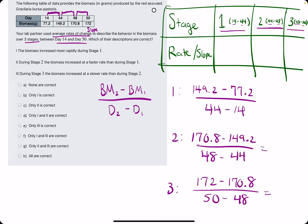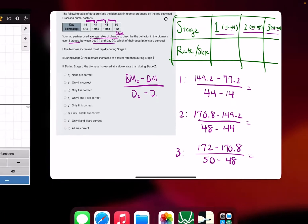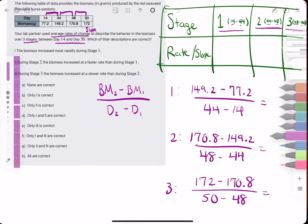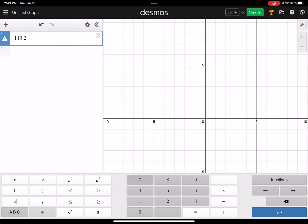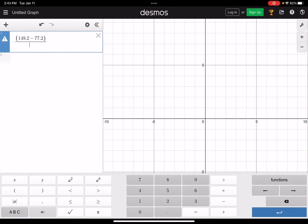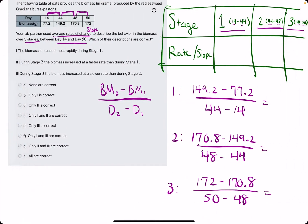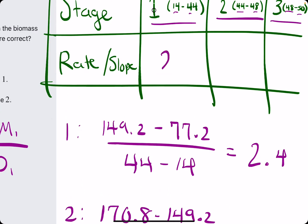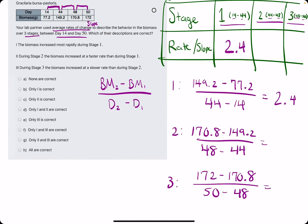So we will find these three slope values. Let's go ahead and open up Desmos and do it there. 149.2 minus 77.2. 72. Nice. And we'll divide that by 44 minus 14. And that'll give us 2.4. 2.4. And we'll throw a 2.4 for that rate of change or slope value in our little chart.